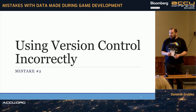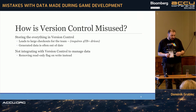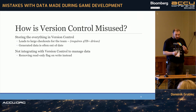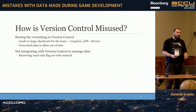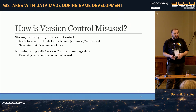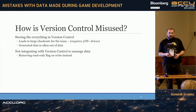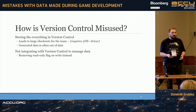The next mistake is not using version control correctly. There are two key ways version control is misused. The first is trying to store everything in version control — all the source assets from human-created content, but also all the compiled and generated assets. This leads to the famous example of everybody on the team needing four terabyte-plus NVMe drives just to have one or two checkouts of the game.